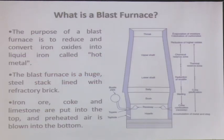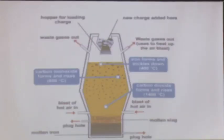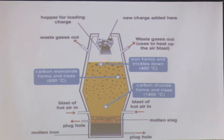A blast furnace is generally around 100 feet in height. It has different zones. Raw materials are fed from the top and there are temperature gradients from top to bottom. Your reactions start at different temperatures, and ultimately you get molten metal at the bottom. Iron forms and trickles down around 400°C; carbon monoxide forms and rises at 800°C; carbon dioxide forms and rises at around 1400°C. The melting point of iron is 1539°C.